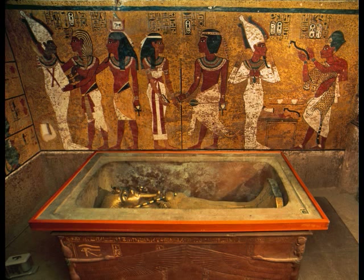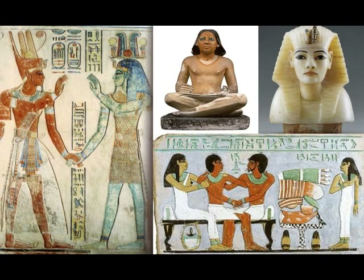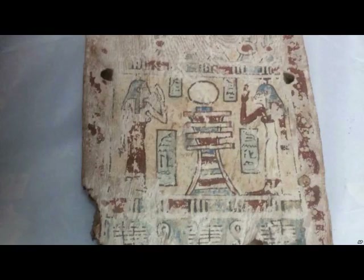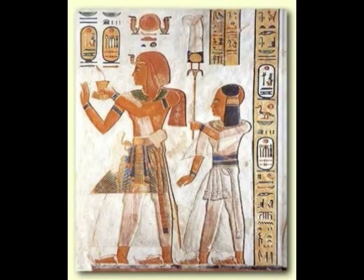Religion in Ancient Egypt was fully integrated into the people's daily lives. The gods were present at one's birth, throughout one's life, in the transition from earthly life to the eternal, and continued their care for the soul in the afterlife of the Field of Reeds. The spiritual world was ever present in the physical world, symbolized through images in art, architecture, amulets, statuary, and the objects used by nobility and clergy in the performance of their duties.